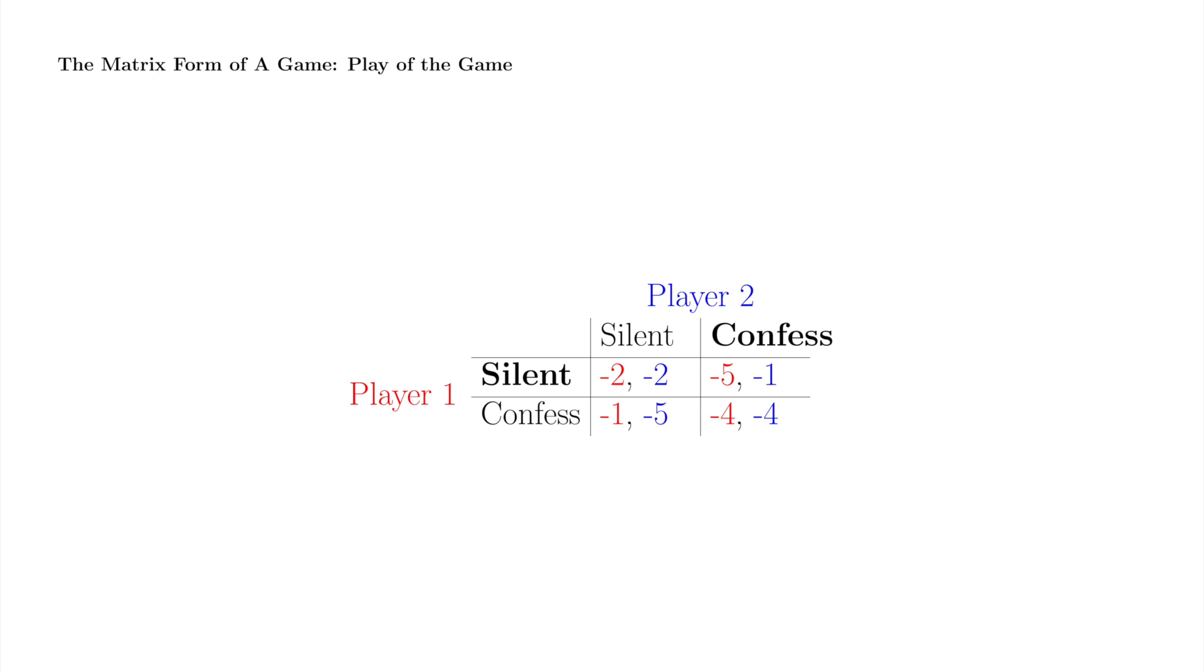Now, let's see everything in action. Suppose player 1 plays silent and player 2 plays confess. Player 1's payoff, minus 5, is the number on the left in the matrix entry corresponding to the row in which player 1 plays silent and the column in which player 2 plays confess. Player 2's payoff, minus 1, is the number on the right in the matrix entry corresponding to the row in which player 1 plays silent and the column in which player 2 plays confess.